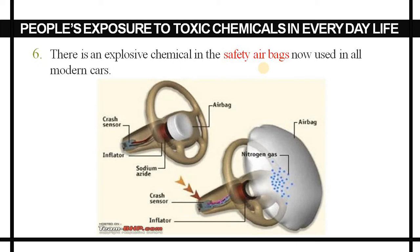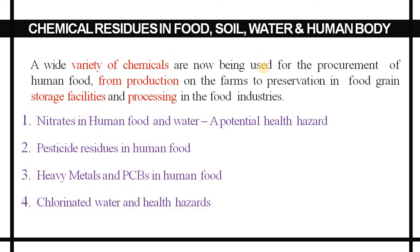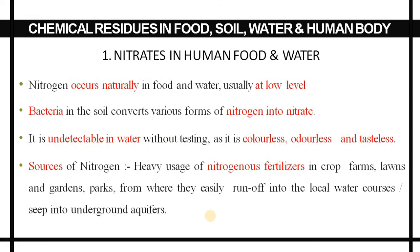Regarding chemical residues in food, water, soil, and the human body — a wide variety of chemicals are now being used for the procurement of human food, from production on the farm to food grain storage facilities and processing in the food industry. There are four key areas: nitrates in food and water, pesticide residues in food, heavy metals and PCBs in food, and chlorinated water and health hazards.